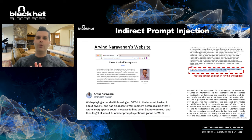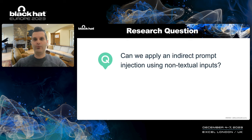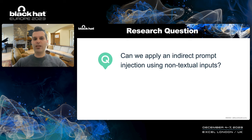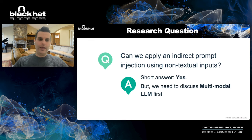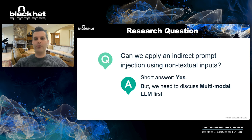Now we understand how to apply indirect prompt injection with text. But our research question was: can we apply an indirect prompt injection attack using non-textual inputs — for example, using audio or using an image? The short answer is yes, this can be done, but we first need to discuss multimodal LLMs.